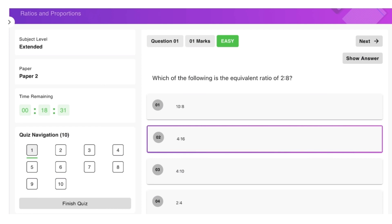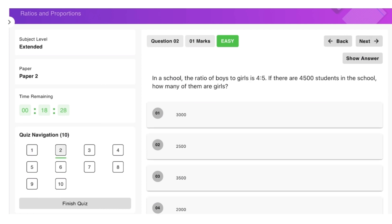In a school, the ratio of boys to girls is 4:5. If there are 4500 students in the school, how many of them are girls? Okay, so basically, totally we have 9 parts. So we are going to divide 4500 by 9, and this is going to result in 500 students. So each part is basically 500.